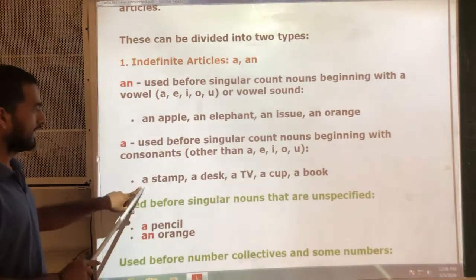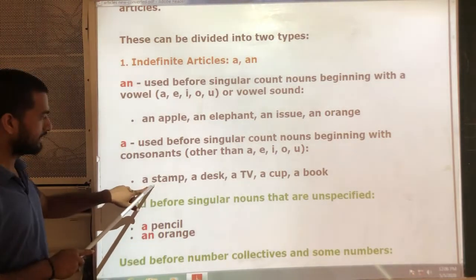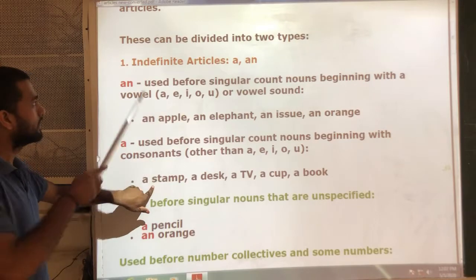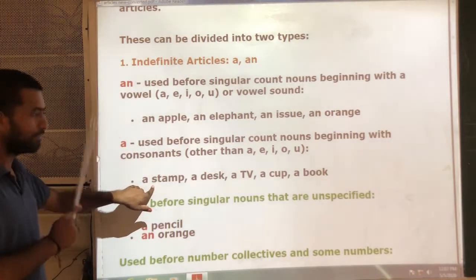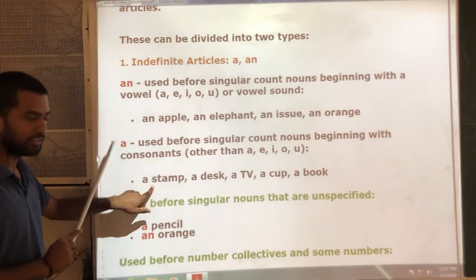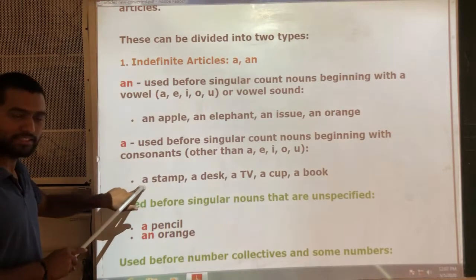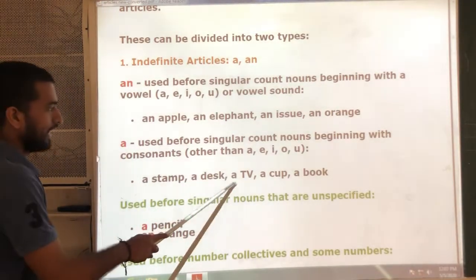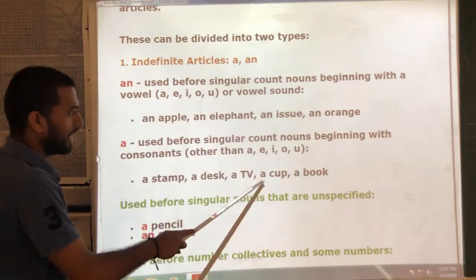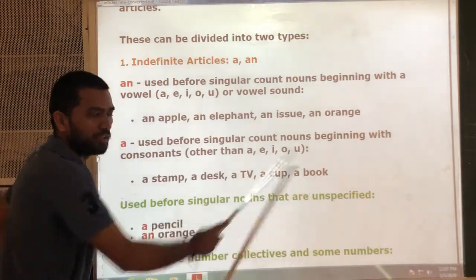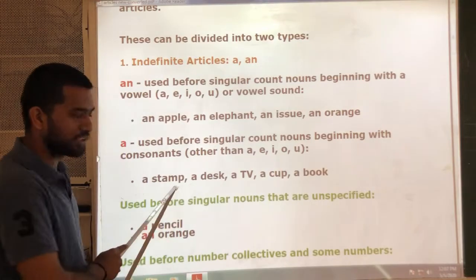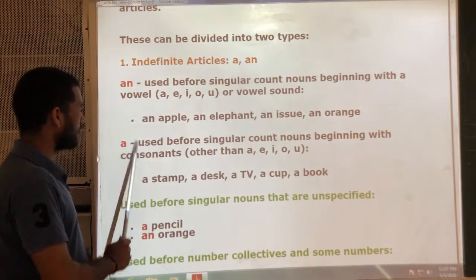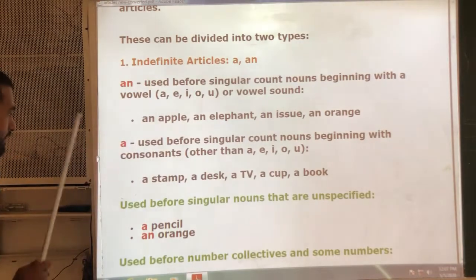Look at the examples: a stamp — here S is a consonant, so we use the article 'a'. A desk, a TV, a cup, and a book. These are examples of words before which we use the article 'a'.